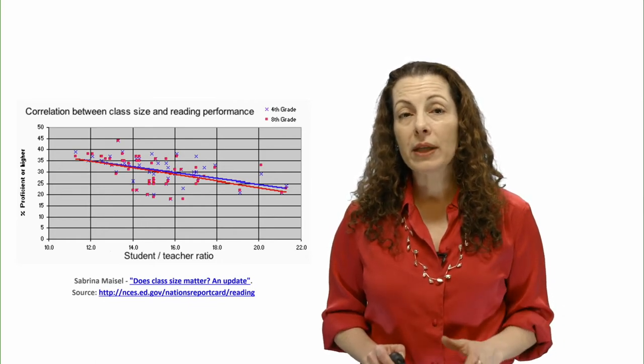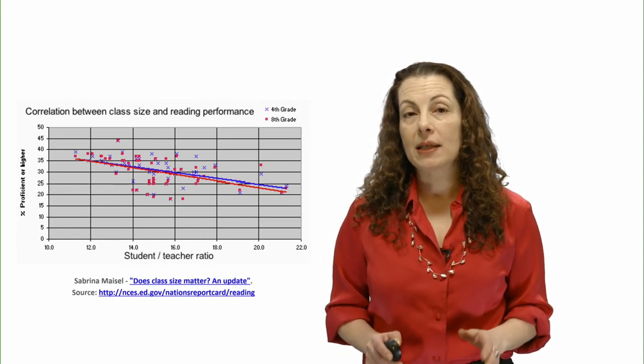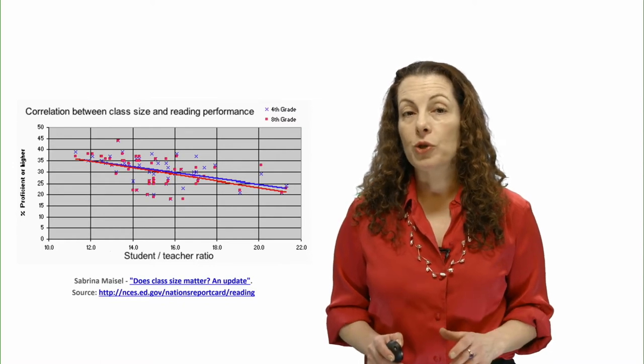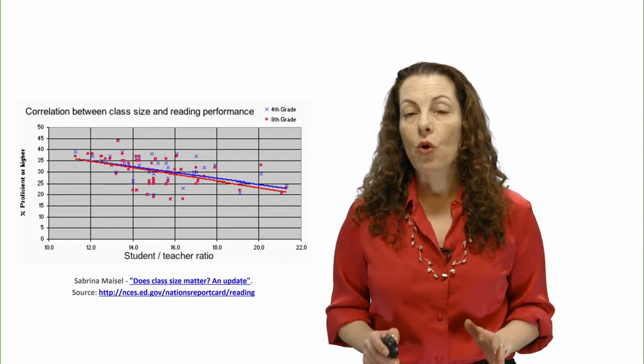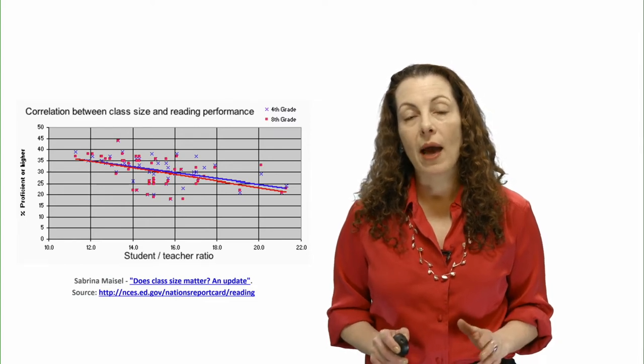Because similarly situated teachers and students were randomly assigned, we can infer that class size explains the improvement in test scores. By comparing two identical groups chosen at random, we can control for a whole range of factors that enable us to understand what is working and what is not. This is why many consider RCTs to be the gold standard of evidence.